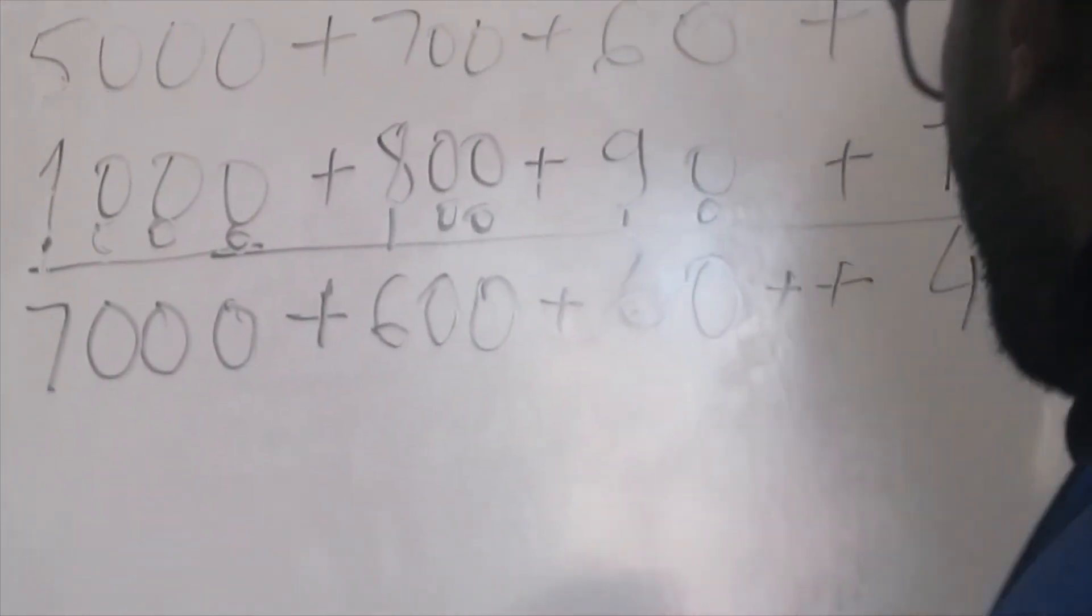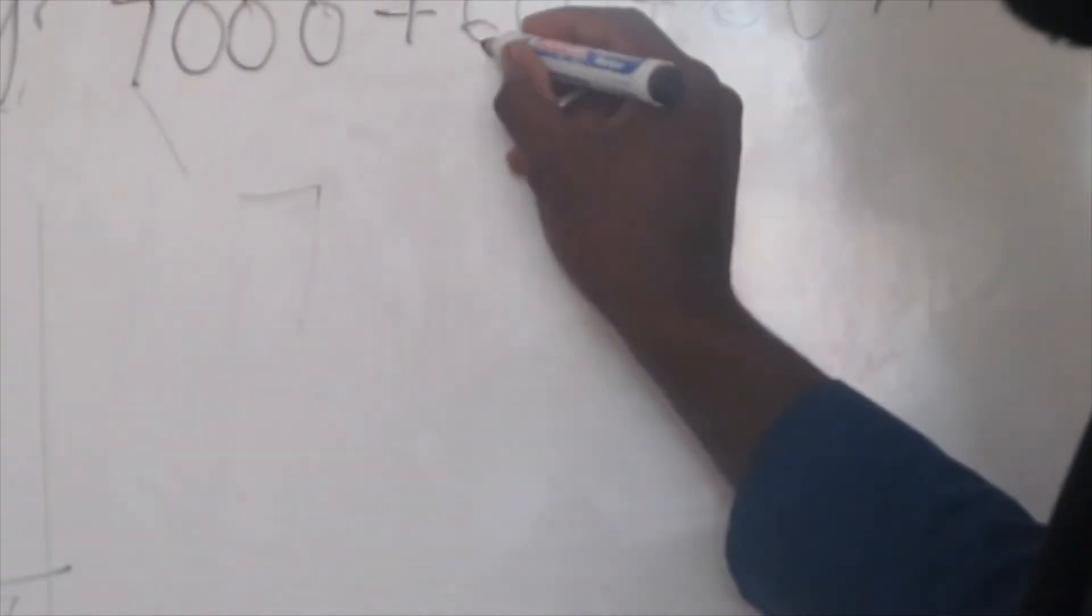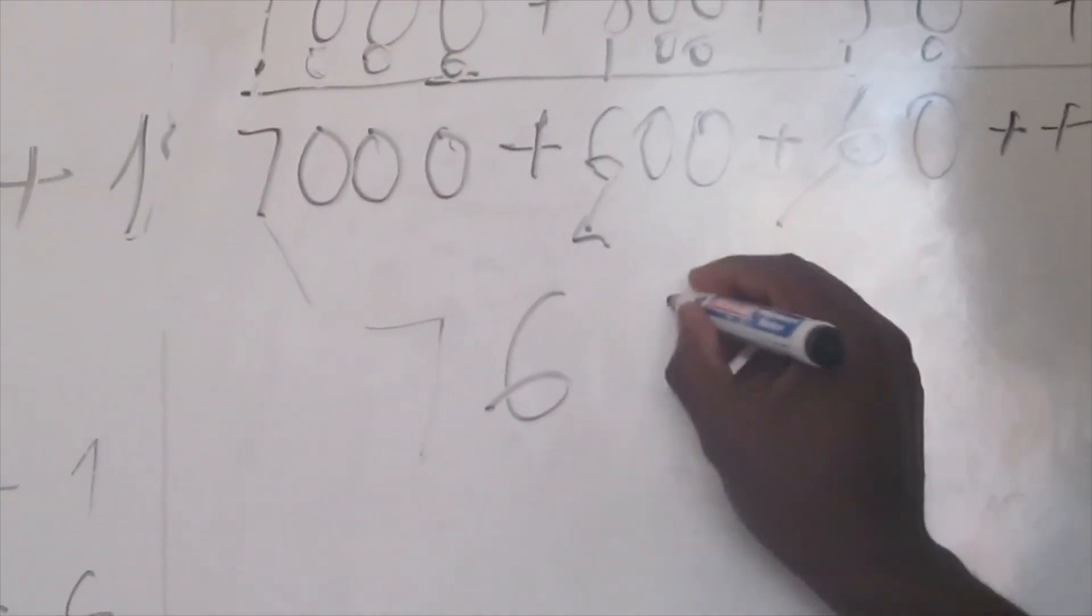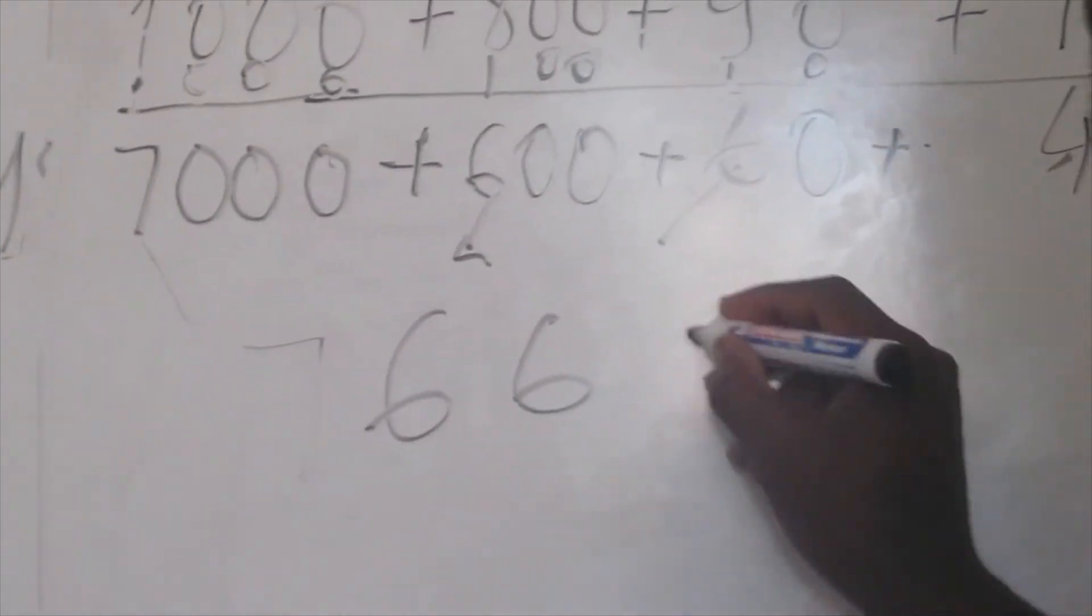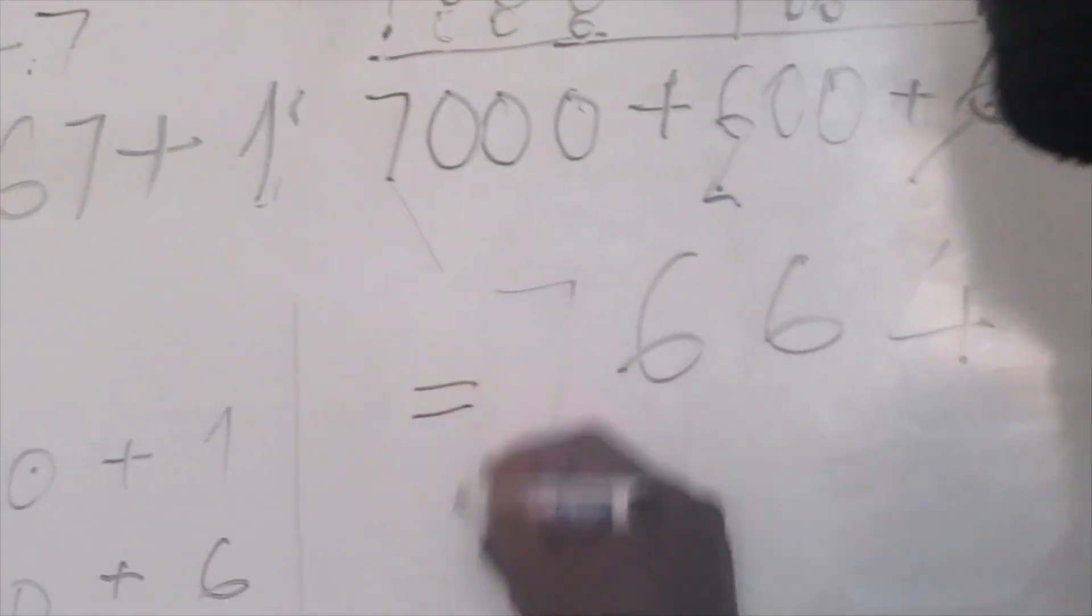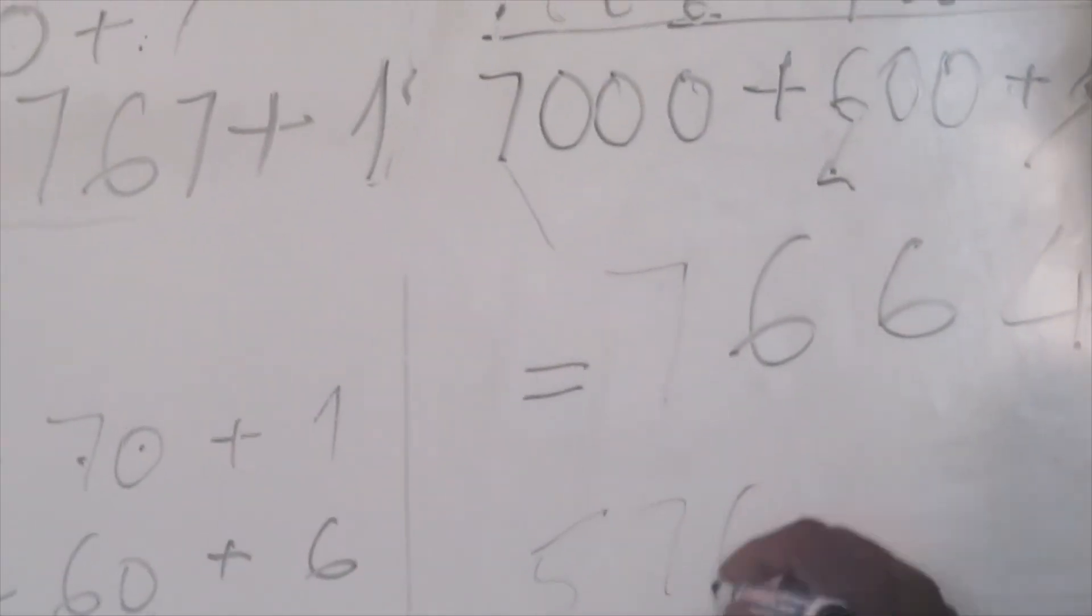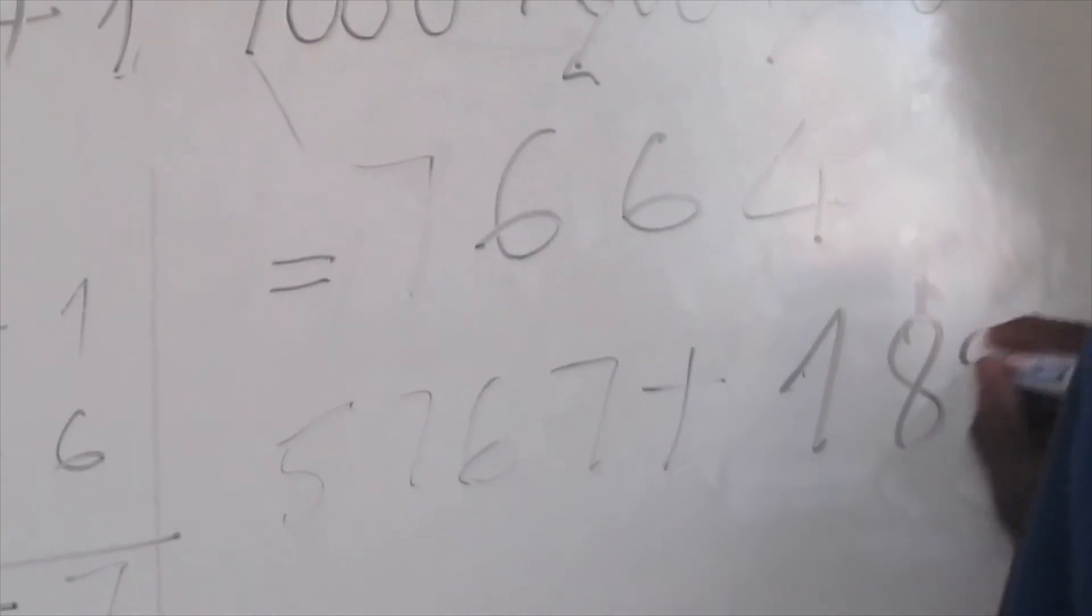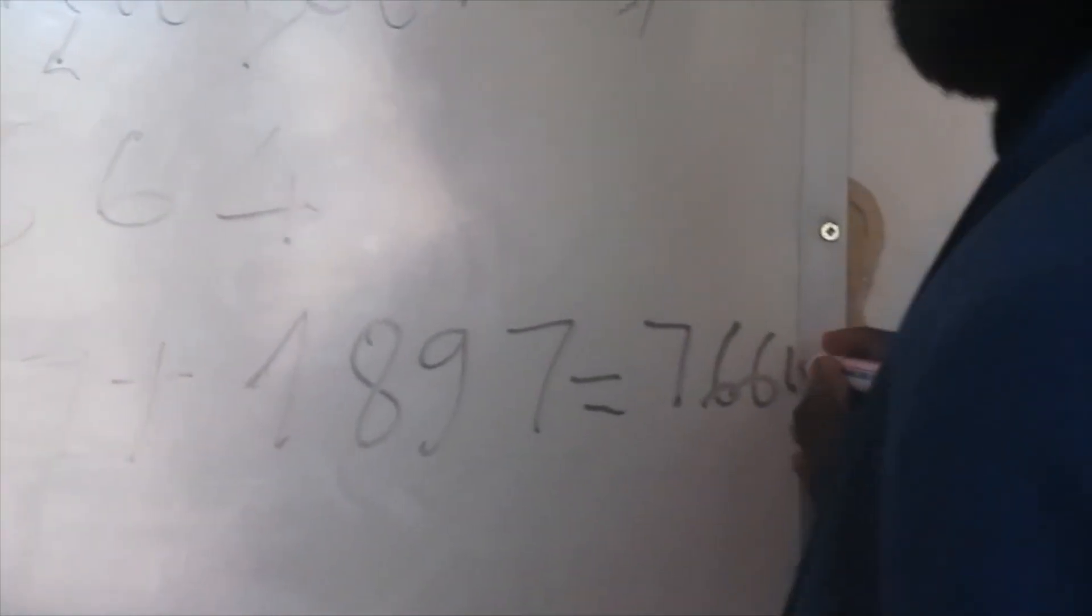Now we just drop down the digits: 7, drop this one 6, drop this one 6, drop this one 4. Now this is our answer: 5,767 plus 1,897 equals 7,664.